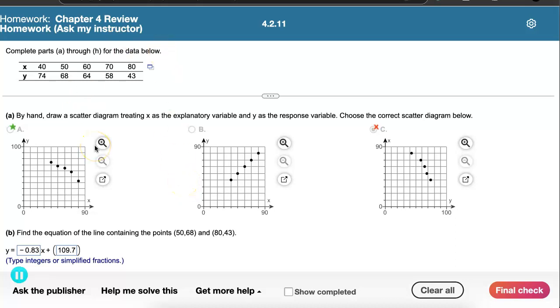In this example, we're asked to complete several things regarding a set of data given here. I can see that the first couple of things we're asked to do is to draw a scatter diagram and to find an equation of a line containing two specific points.